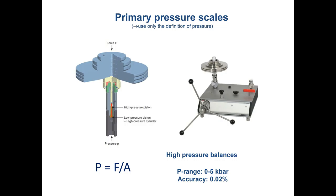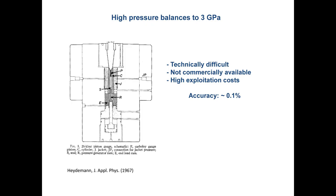At large-scale facilities, they have many pressure transducers that need to be calibrated, and they buy such machines for that purpose. But the limit is about 3 GPa — a piston-cylinder device doesn't work much beyond 1 GPa, as we heard from Konstantin. So you can push the pressure a little higher, but then it becomes very difficult. This is a high-pressure balance to 3 GPa — the limit of a piston-cylinder device.